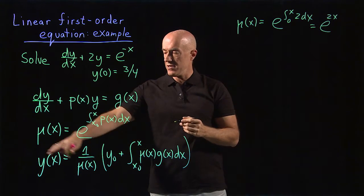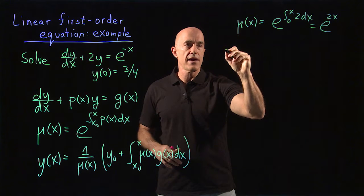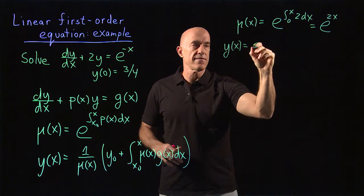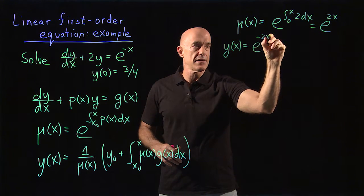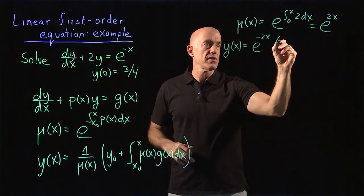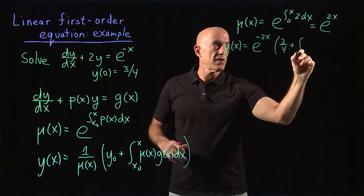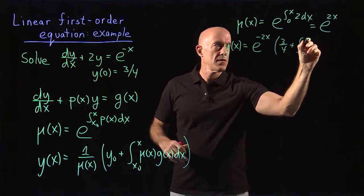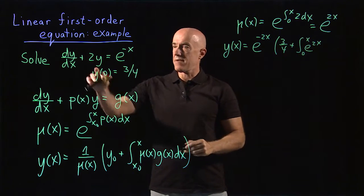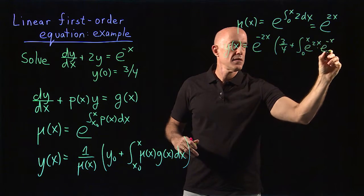So that's our integrating factor. And then we can construct the solution. So y(x) is equal to 1 over the integrating factor, which is e^(-2x), times y₀, y(0) is 3/4, plus the integral from 0 to x of the integrating factor e^(2x) times the right-hand side, e^(-x)dx.